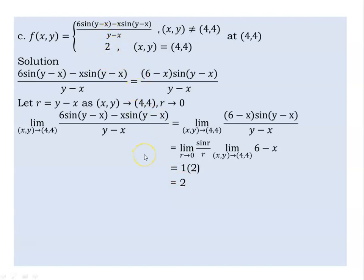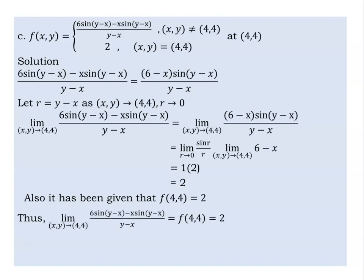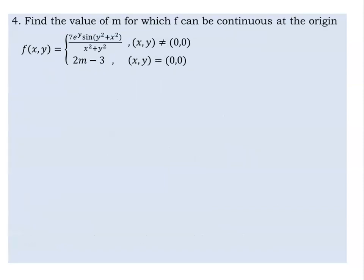The function is continuous, so we can say that the function is continuous at the point (4,4). Now it says: find the value of M for which F can be continuous at the origin.